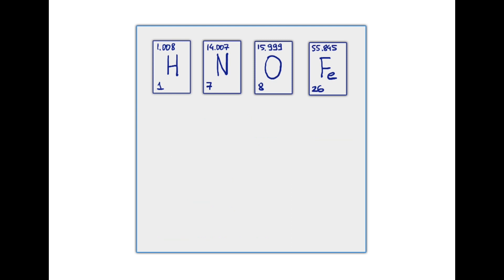One mole of water is made of 2 moles of hydrogen atoms and 1 mole of oxygen atoms. The mass of 1 mole of hydrogen is 1 gram, but we take it twice. The mass of 1 mole of oxygen is 16 grams. The sum of these masses will be the mass of 1 mole of water.